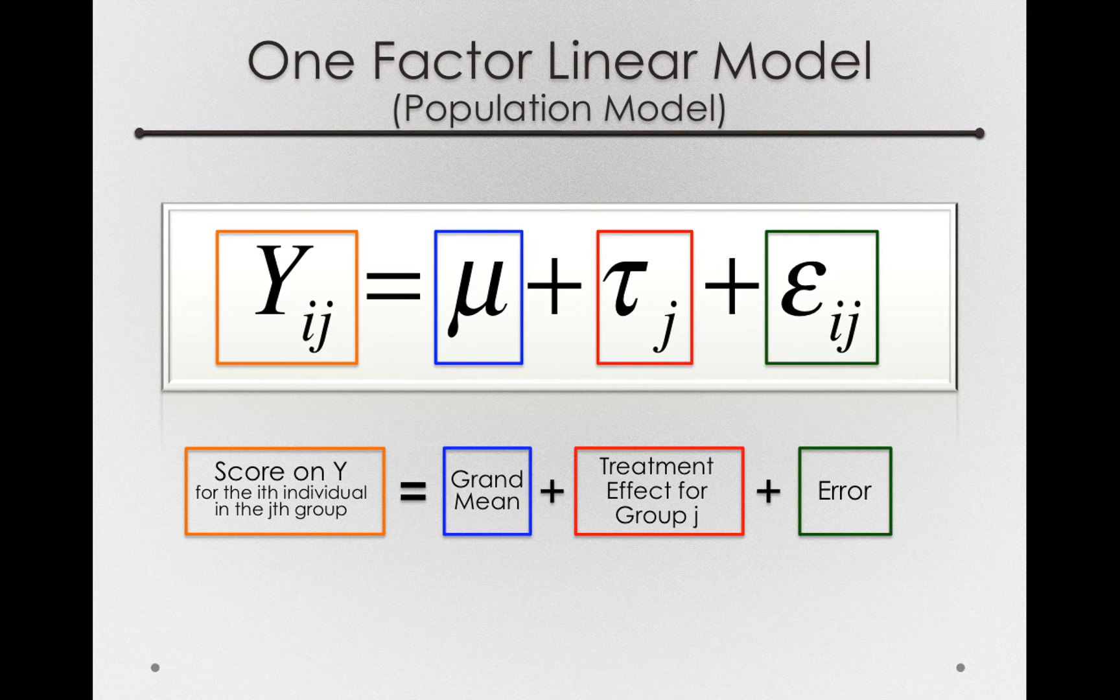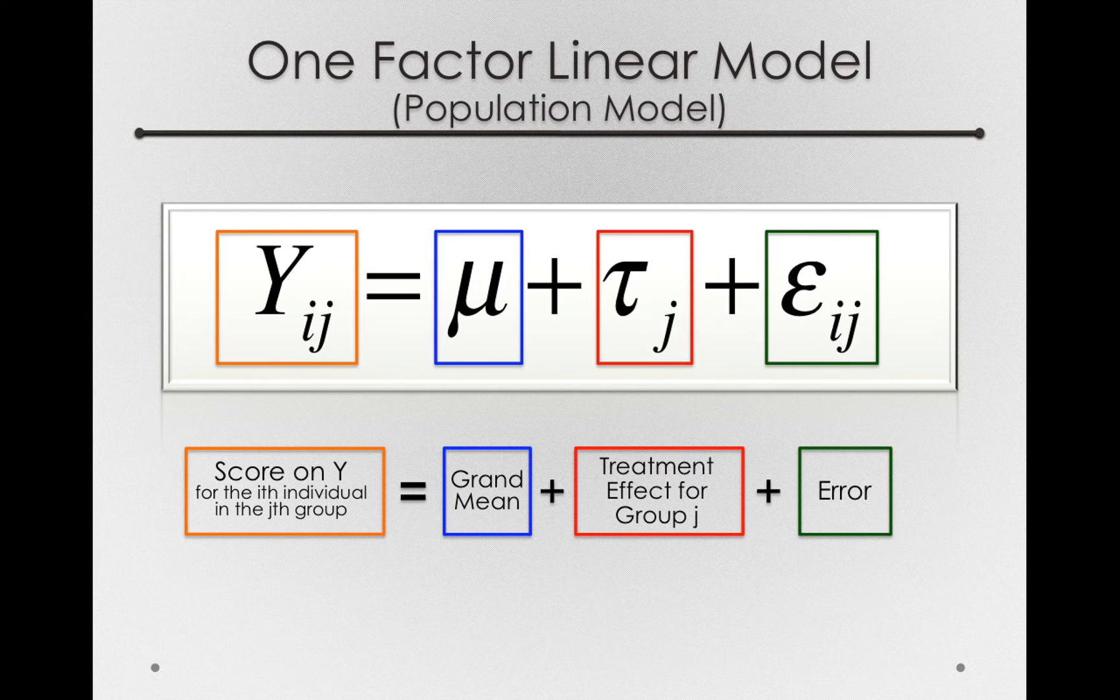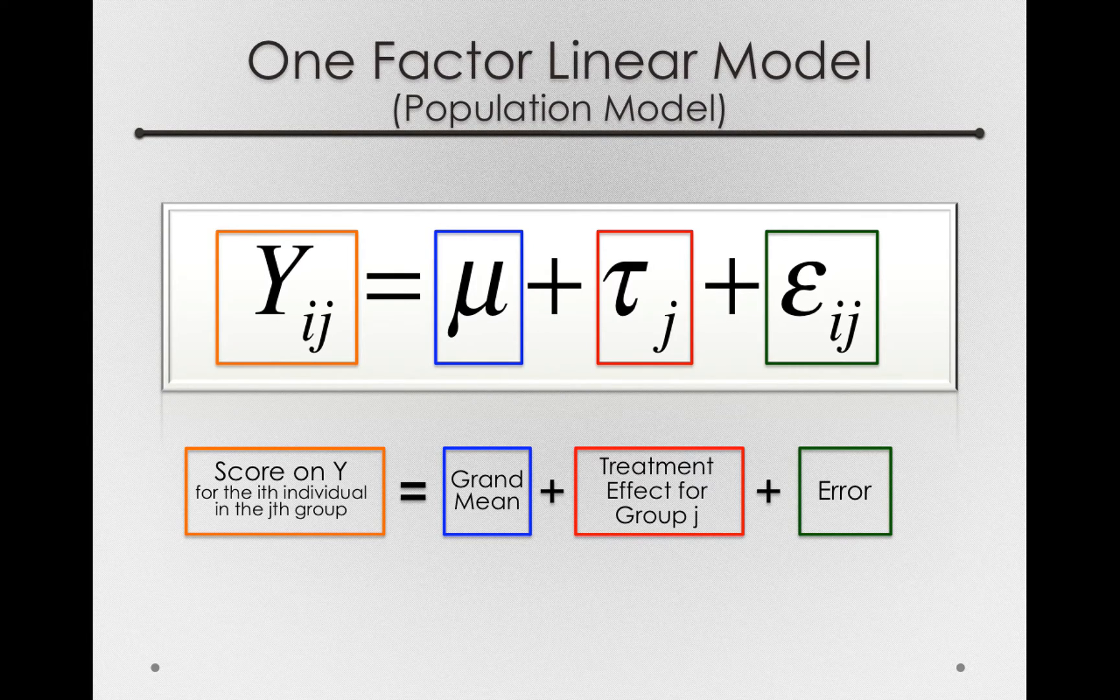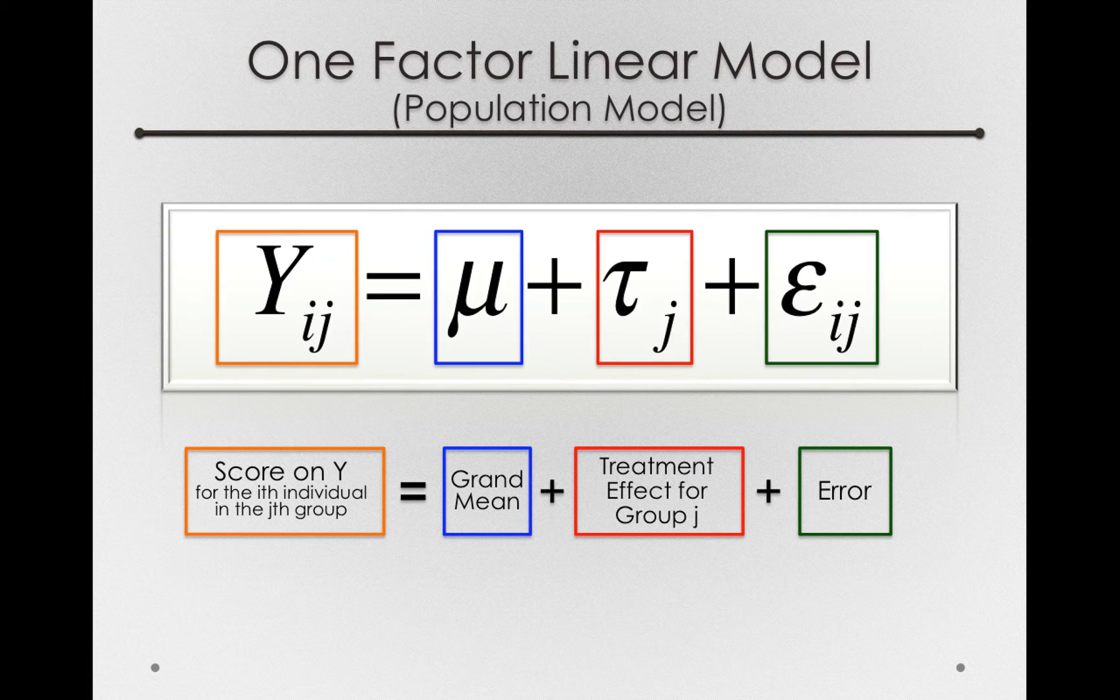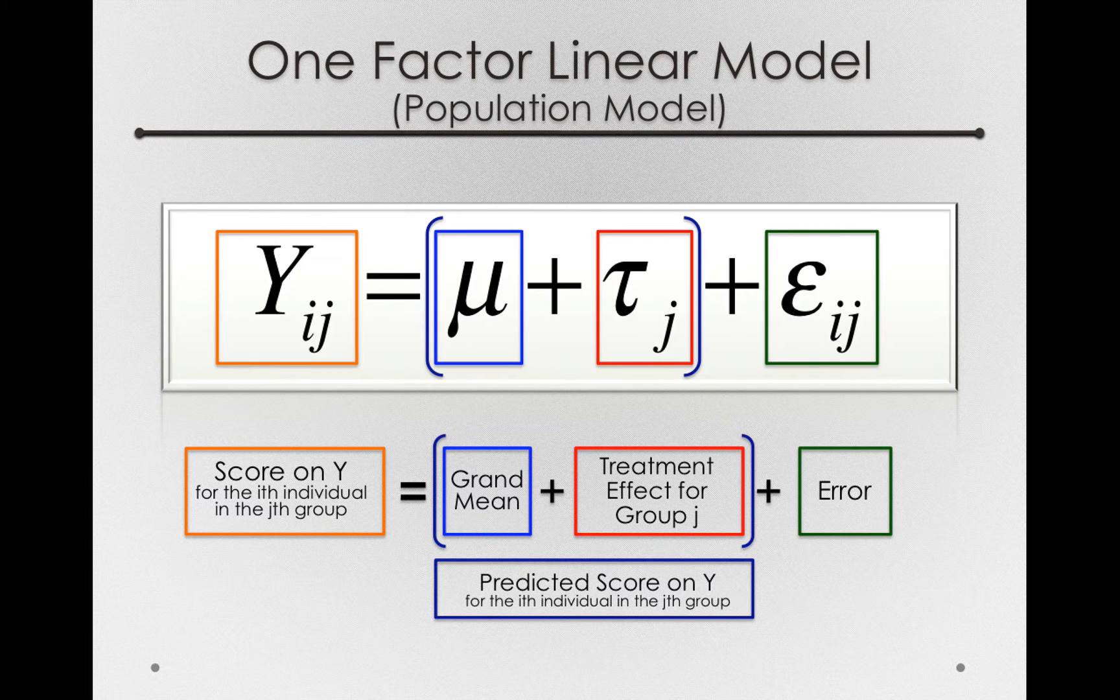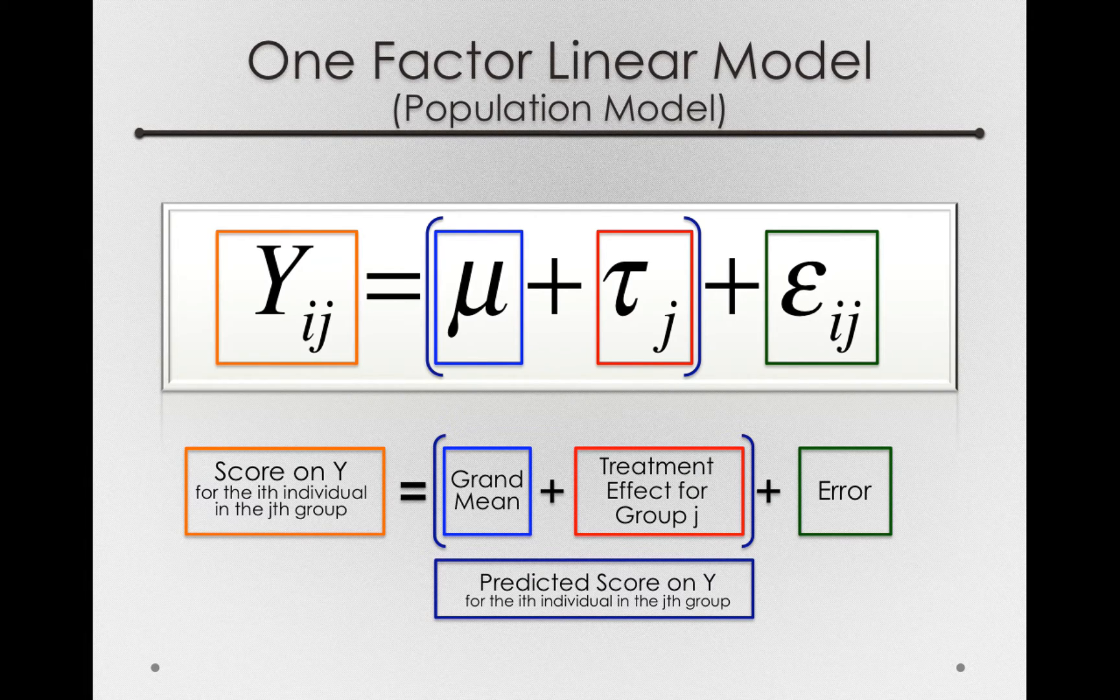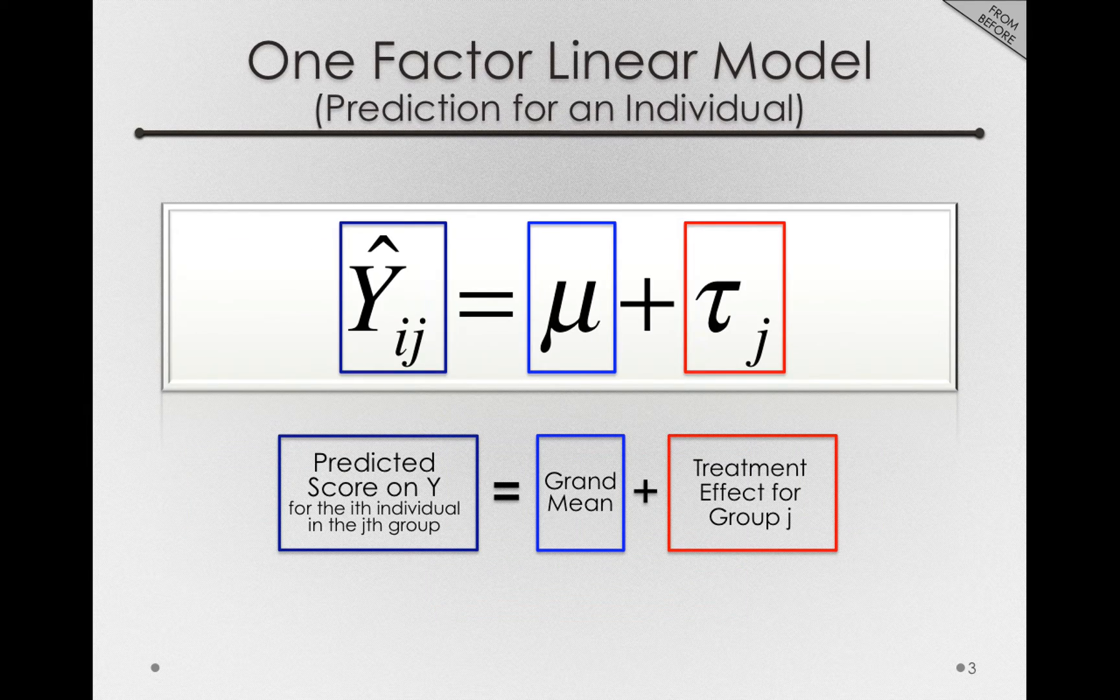In our previous videos, we developed the one-factor linear model, which described an individual score, the y_ij, as a function of three separate pieces: the grand mean, plus a treatment effect for group j, plus individual error. Recall that this interior portion that doesn't include error is the predicted score on y for the ith individual in the jth group. So this interior portion is really just a function of the grand mean and the treatment effect for group j.